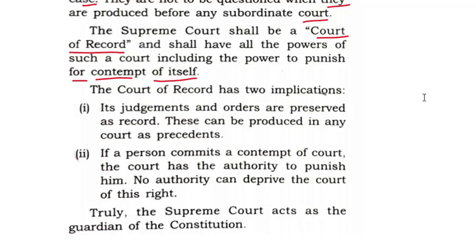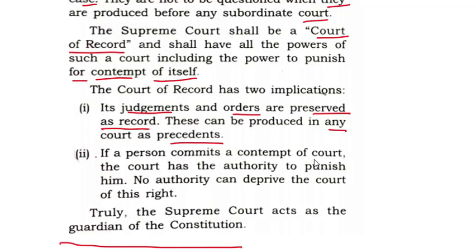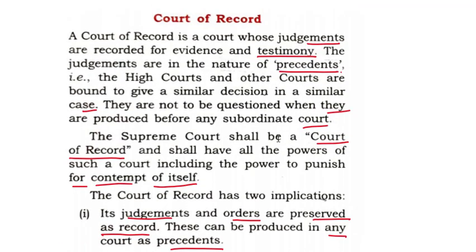The court of record has two implications: first, its judgments and orders are preserved and recorded and can be produced in any court as precedent; second, if a person commits contempt of court, the court has authority to punish them, and no authority can deprive the court of this right. Truly, the Supreme Court acts as the guardian of the Constitution. Whatever judgment the Supreme Court gives becomes a precedent which can be used by other courts.